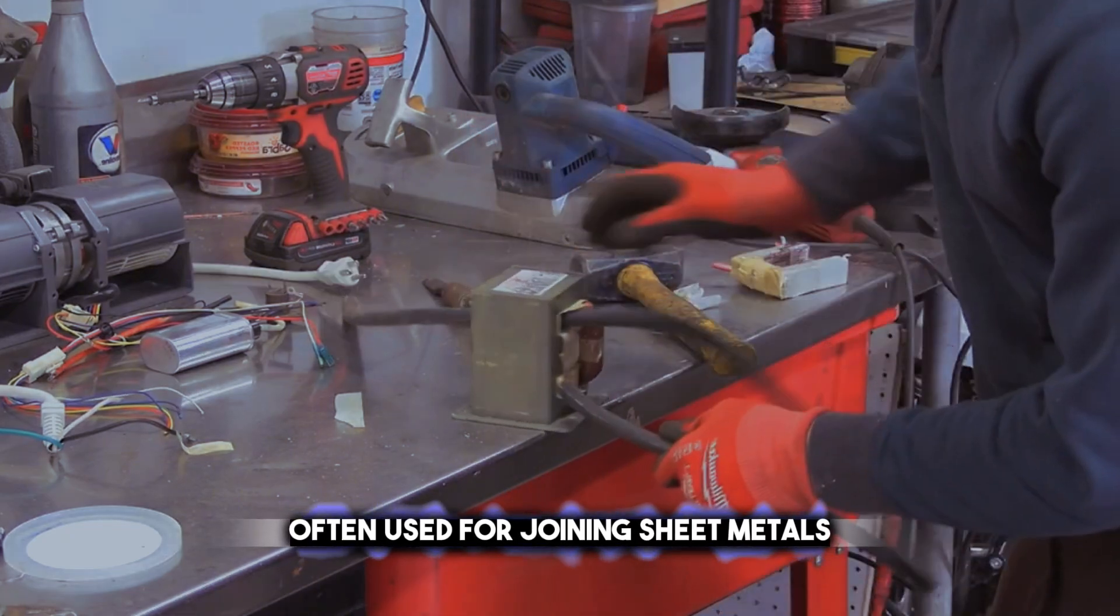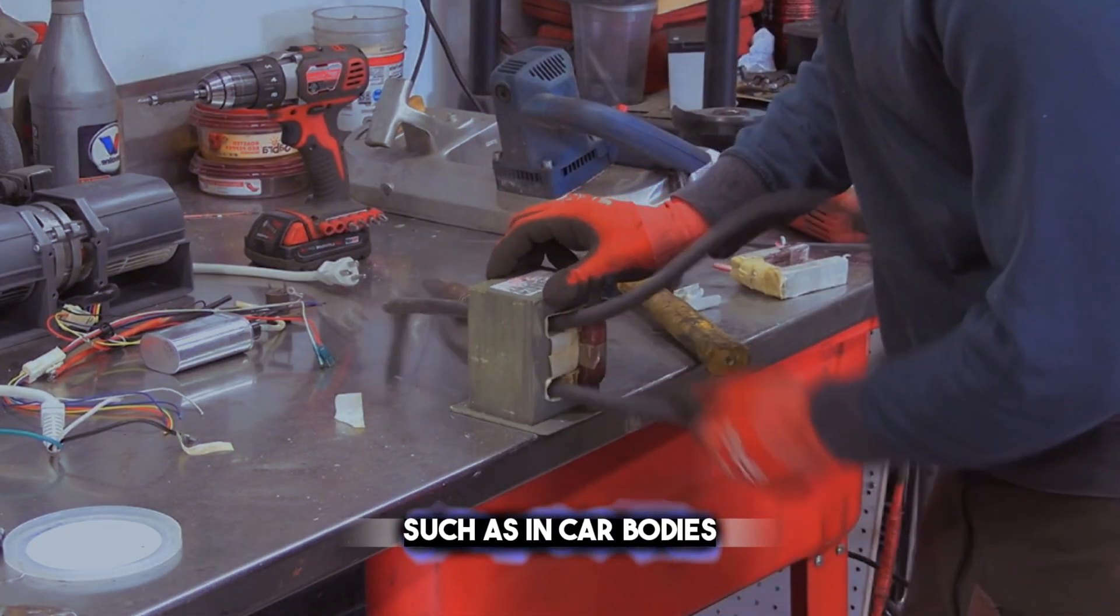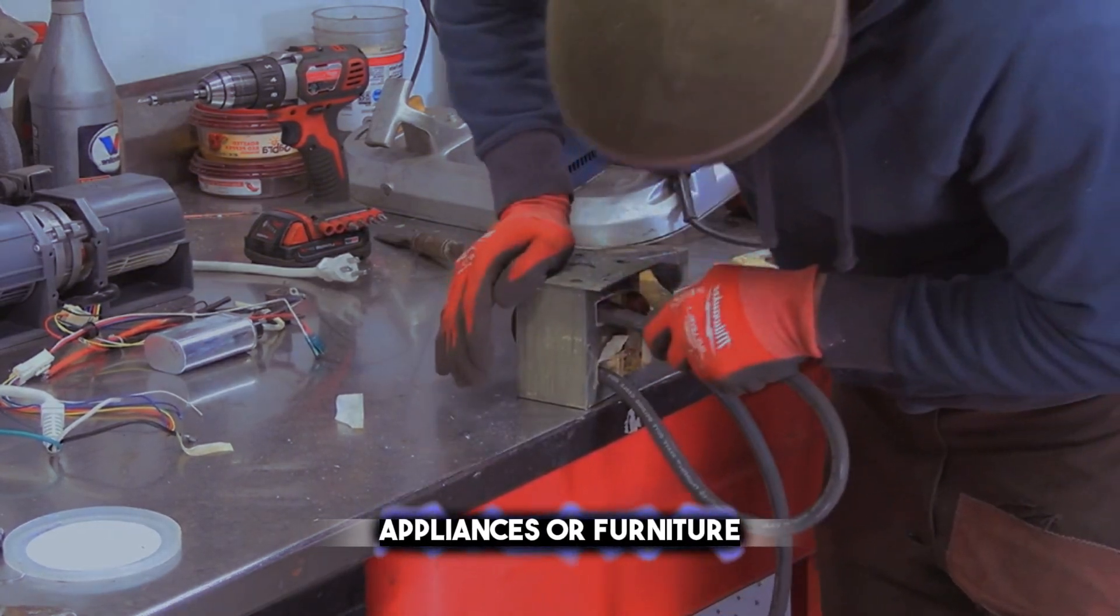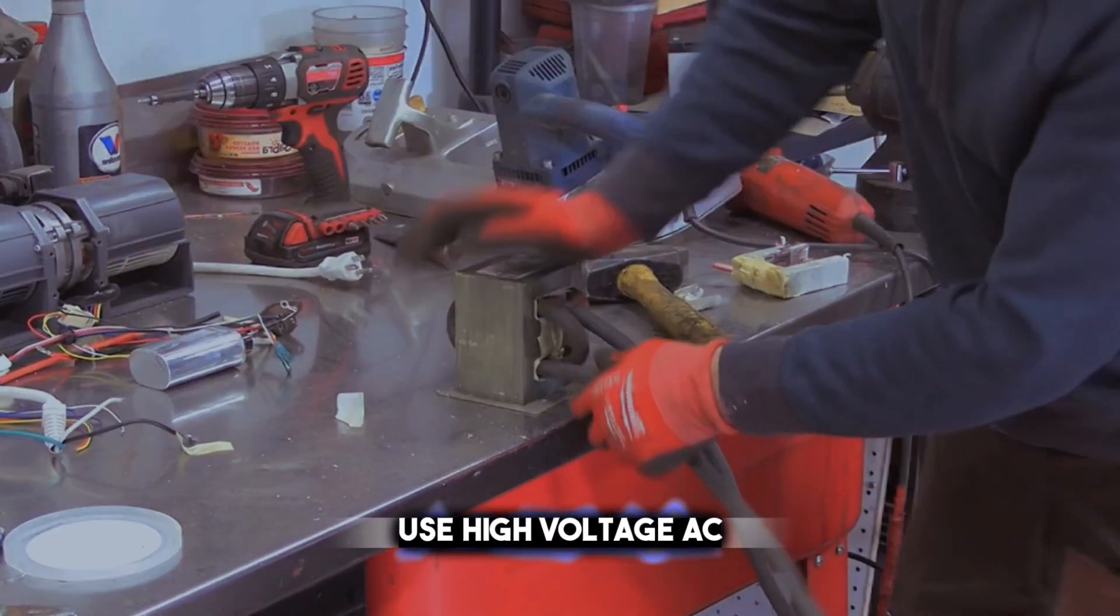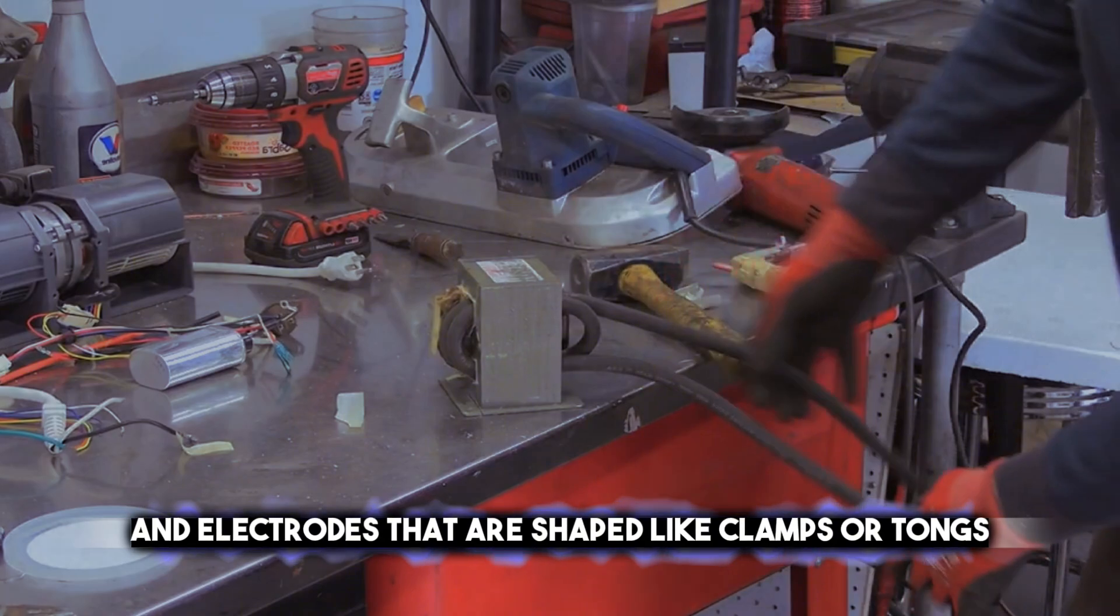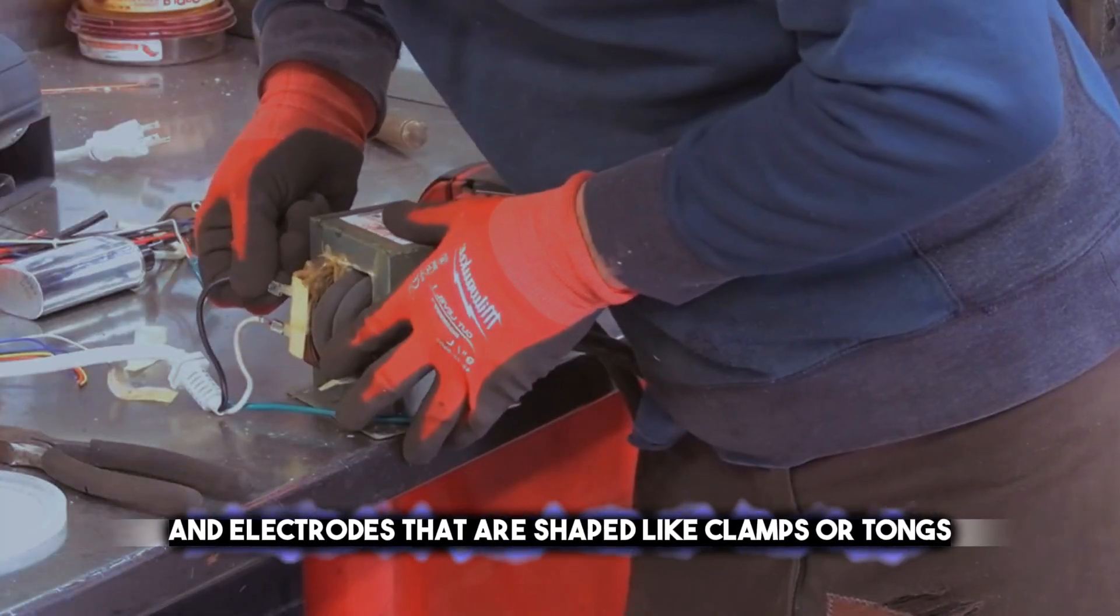Spot welding is often used for joining sheet metals, such as in car bodies, appliances, or furniture. Spot welding machines usually use high-voltage AC power sources and electrodes that are shaped like clamps or tongs.